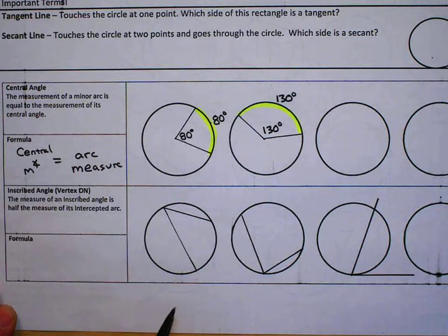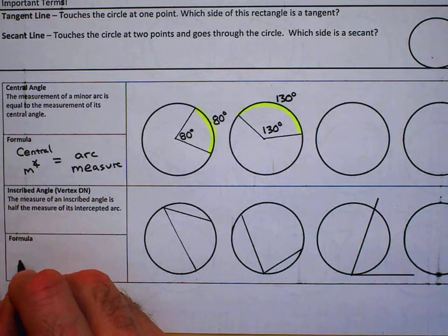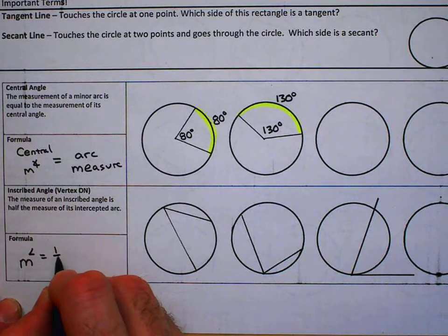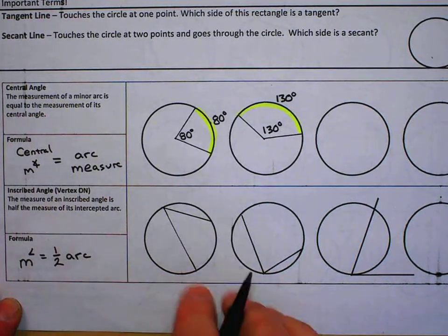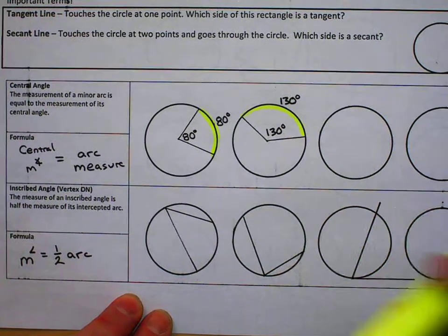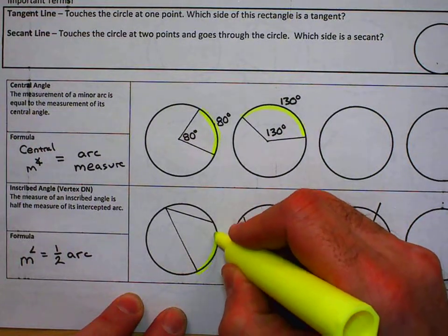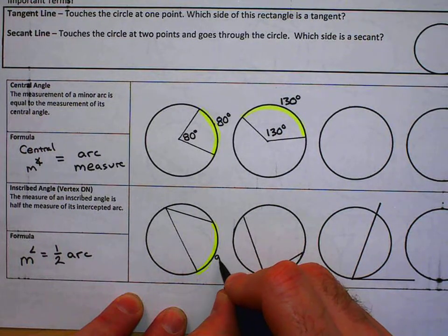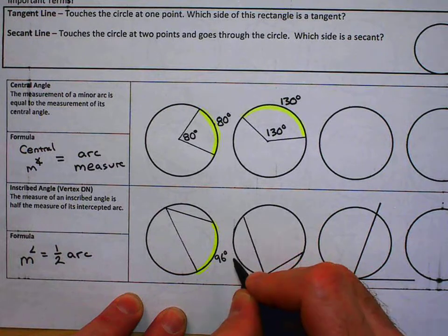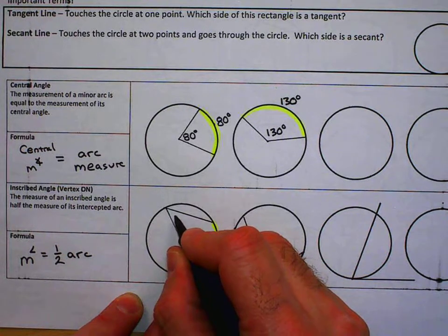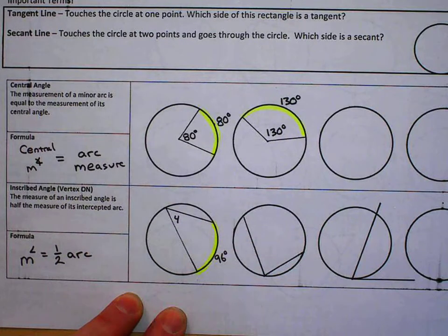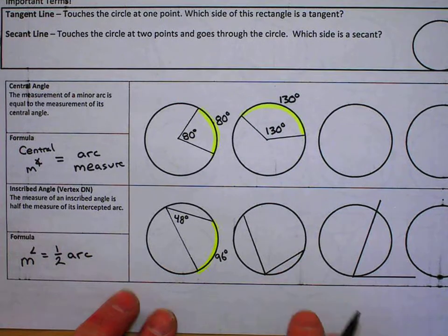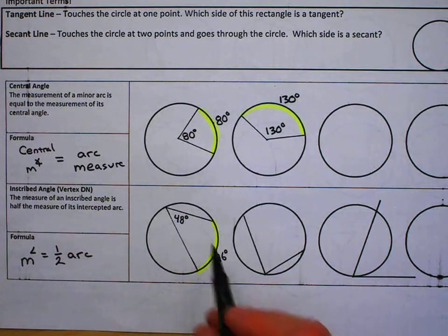Now it gets a little more complicated. Inscribed angles: the measure of the angle itself is equal to half the arc. So if I was told that this arc was 96 degrees, I would know that the inscribed angle that intercepts that is 48 degrees. It's half of it. So I take half of it going from arc to angle.